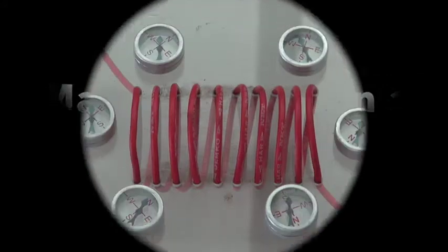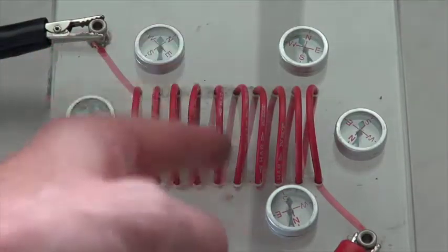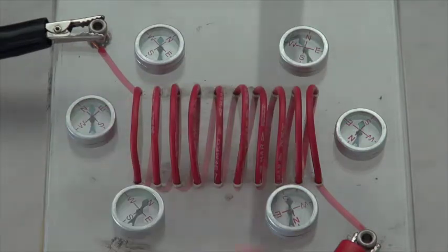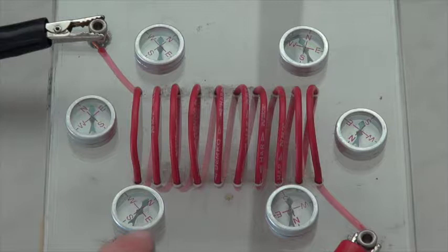In this video we're going to look at the magnetic fields in a solenoid. Now a solenoid basically is a coil of wire. We've got a coil of wire going through a perspex loop. Surrounding this coil of wire we've then got some compasses all pointing in the same direction.